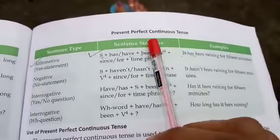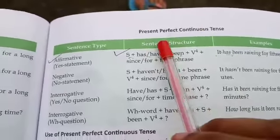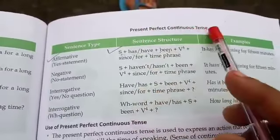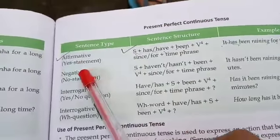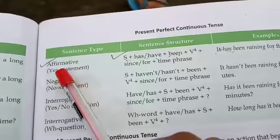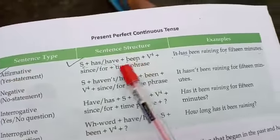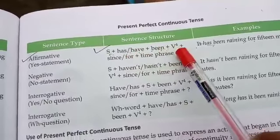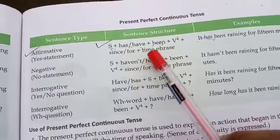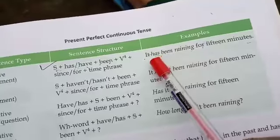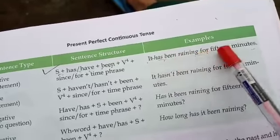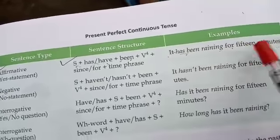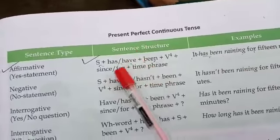Hello students, today we will start explaining present perfect continuous tense. First, see what will happen in affirmative sentences: subject plus has or have plus been plus verb plus since/for plus time phrase. Now see the example: It has been raining for 15 minutes. What do you understand by this sentence structure?